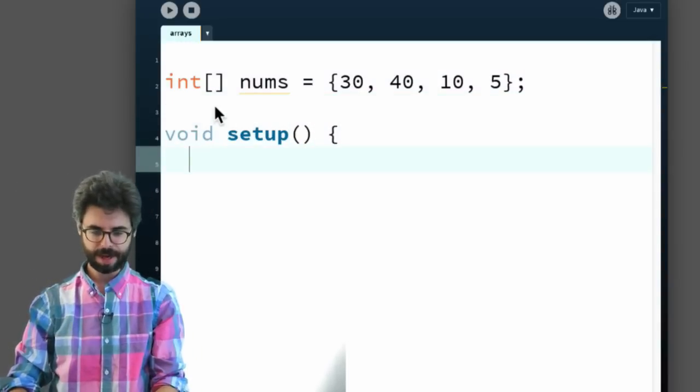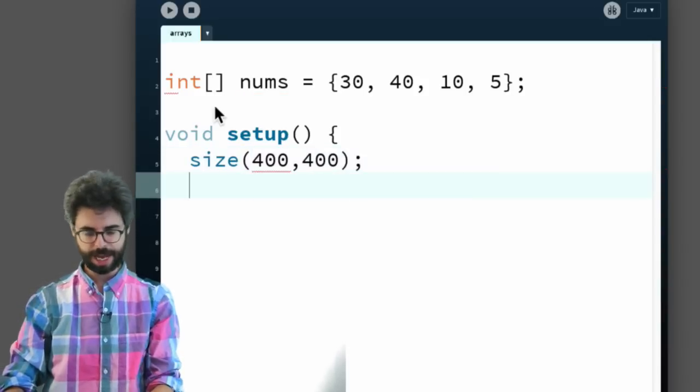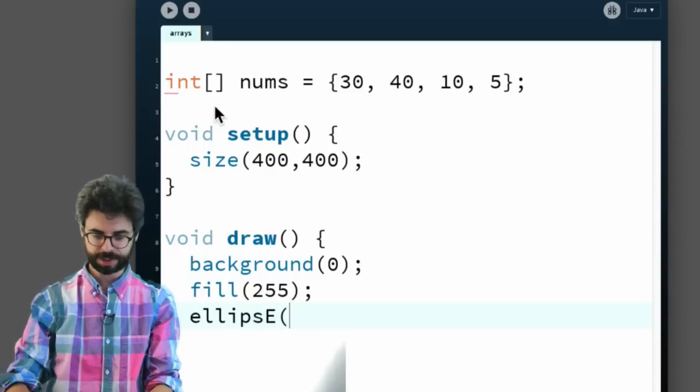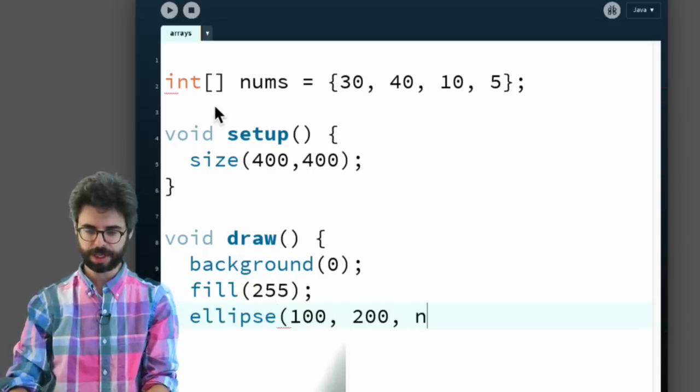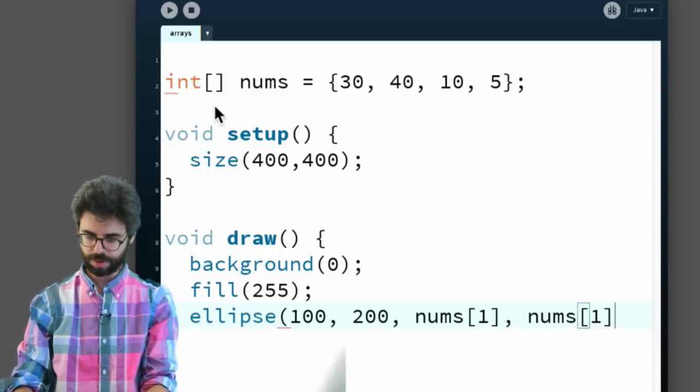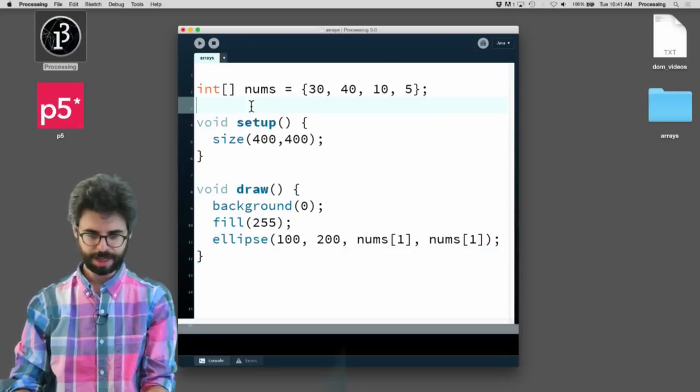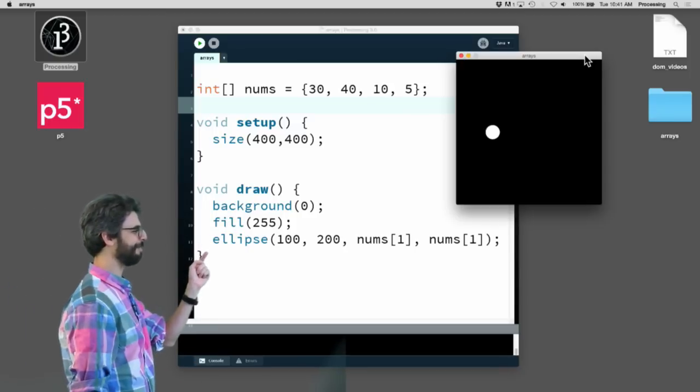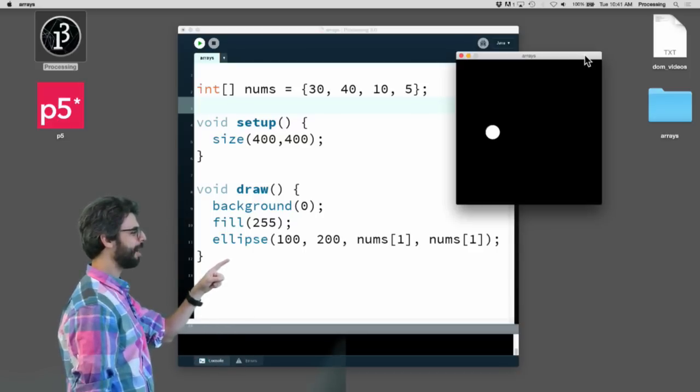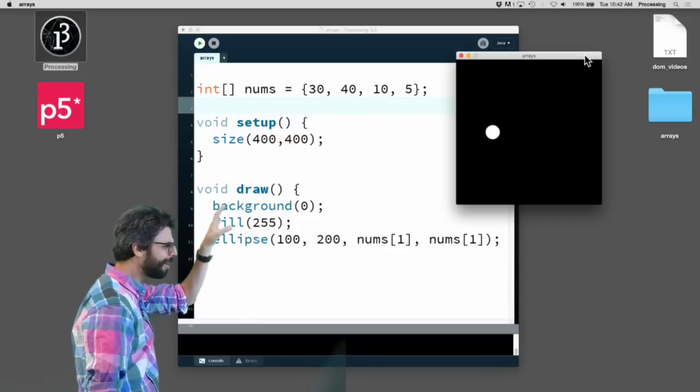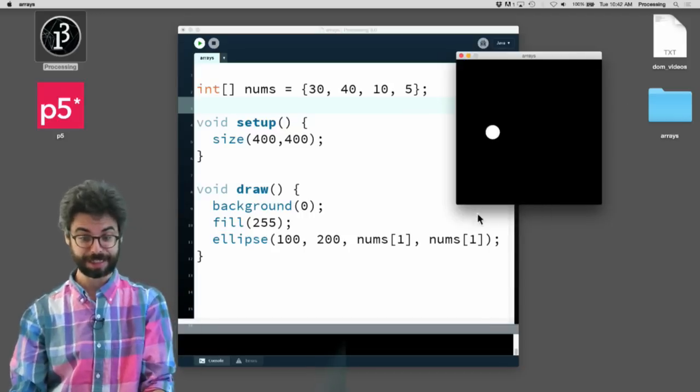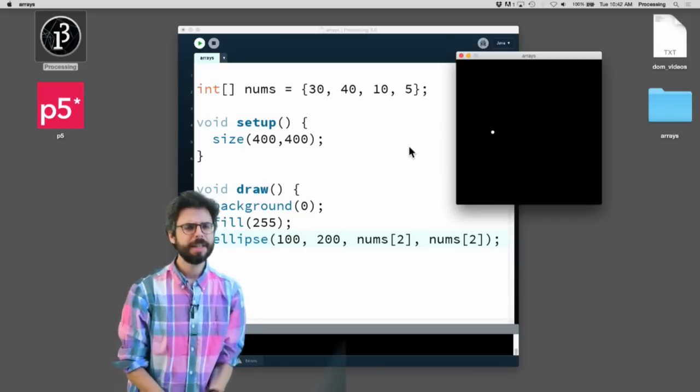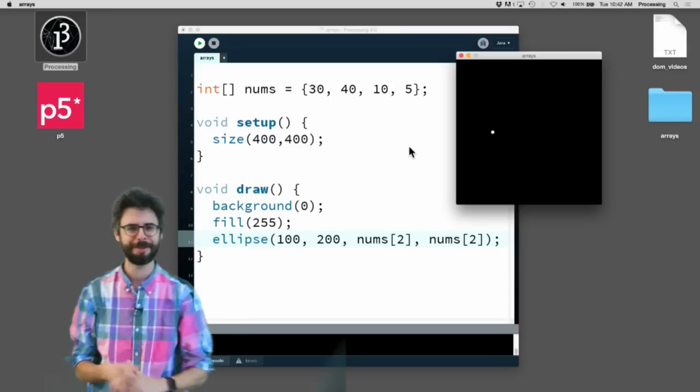So let's go into this program. I'm going to say void setup, size 400, 400. And in draw I'm going to say background zero and fill 255. Then I'm going to say ellipse at 100 comma 200, nums index one, nums index one. Let me run this code and look at the result. The size of that circle is 40. One is 40.